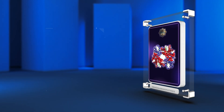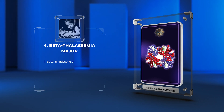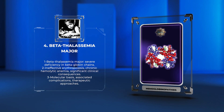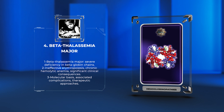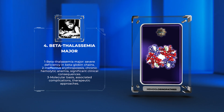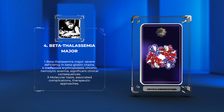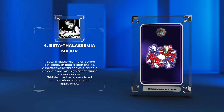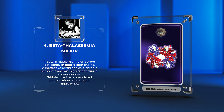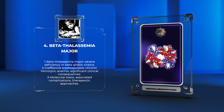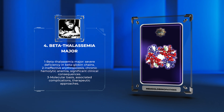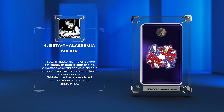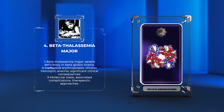Beta-thalassemia major is an autosomal recessive hemoglobinopathy characterized by a severe deficiency in beta-globin chains. This genetic disorder leads to ineffective erythropoiesis, chronic hemolytic anemia, and significant clinical consequences. We will delve into the molecular basis of beta-thalassemia major, associated complications, and therapeutic approaches, including regular blood transfusions and iron chelation therapy.